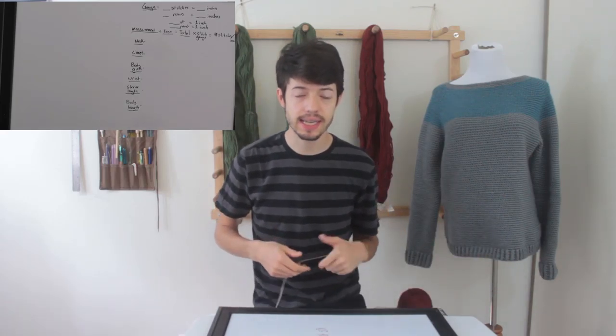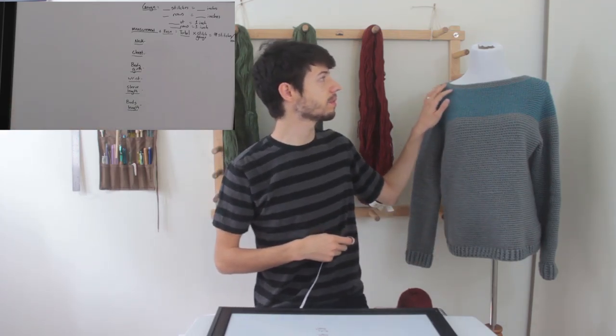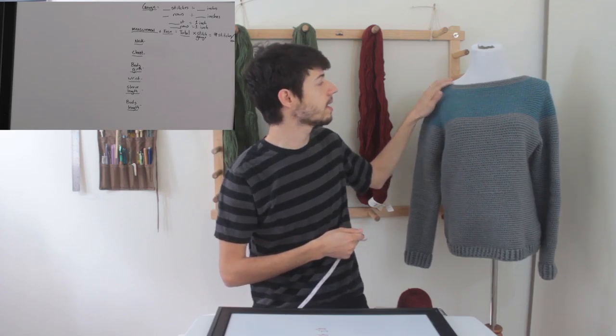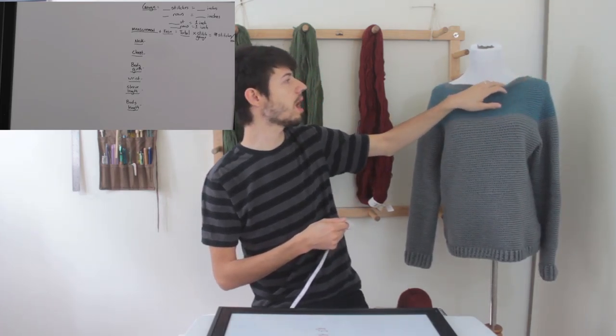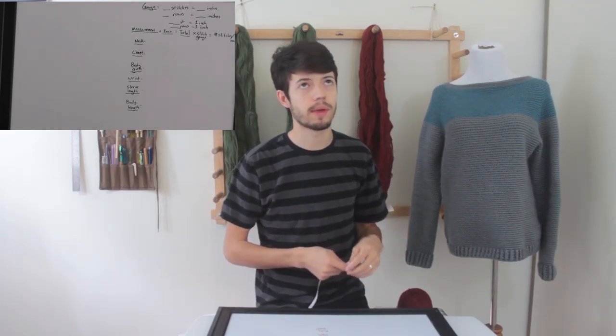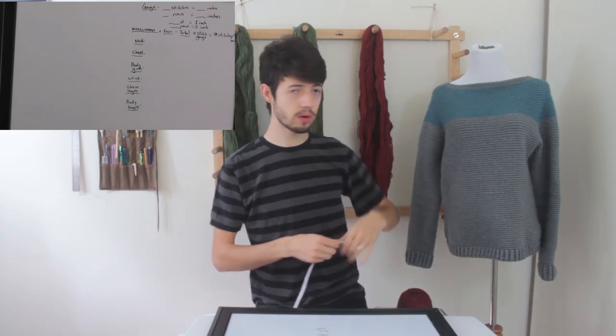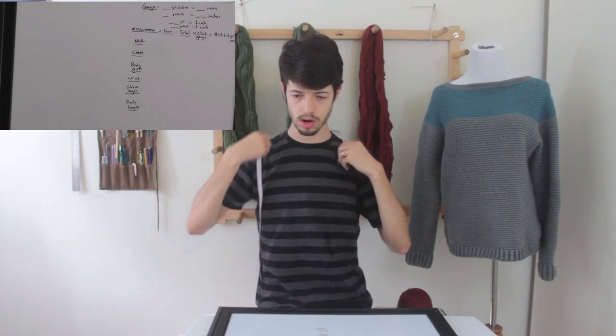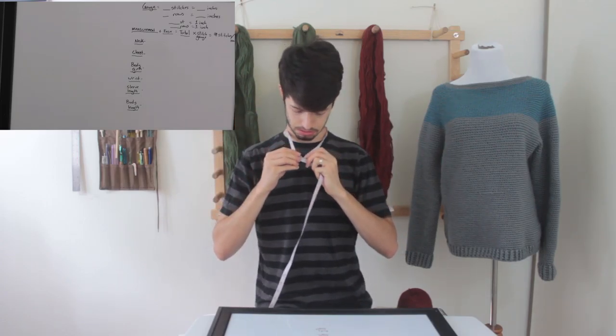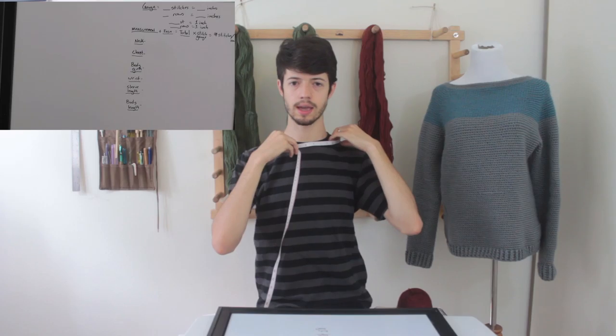So the first measurement that we are going to take is the neck measurement. Depending on what kind of neckline that you are going to choose, you are going to have a different measurement. So this neckline is more of a boat neck. It's not as close to the neck. However, we are not going to measure the head so much as we are going to measure the neck and the area of what we want. So to measure for a boat neck style, take your measuring tape and just wrap it around and kind of get it to the point where you would like your neckline to sit.